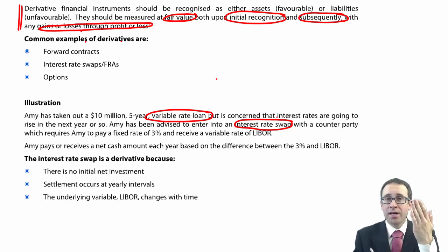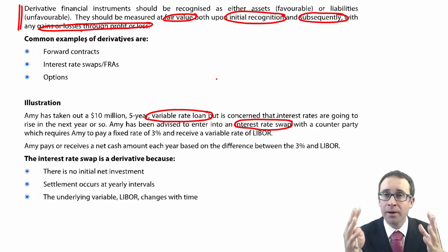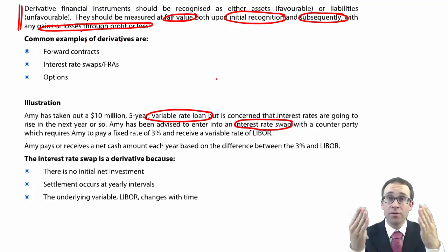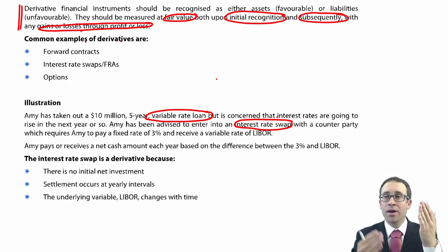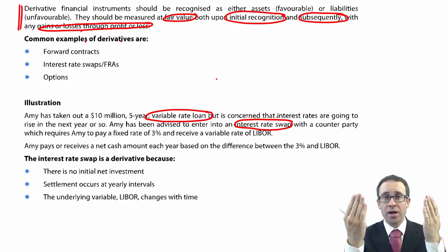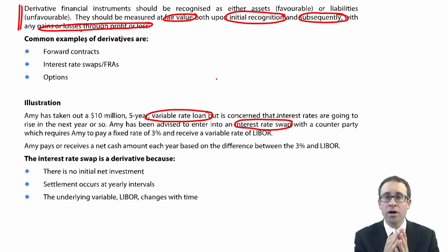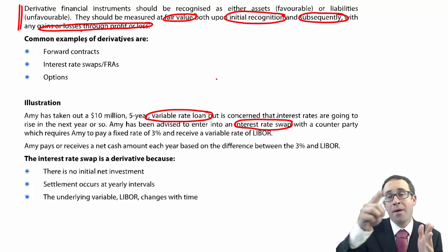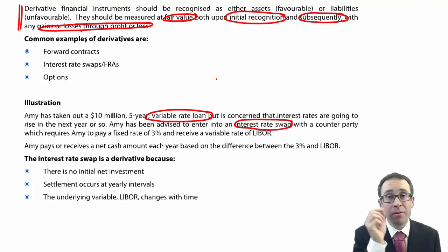You enter into an interest rate swap agreement. There are trillions of dollars of these swaps in existence — you can find somebody who's borrowed the same amount of money for the same period of time. Because you're worried about interest rates rising, you approach the other party and agree to swap the interest payments. You still have your own borrowings, but you swap the payments — you pay theirs and they pay yours. Their interest rate is fixed, which is the key bit: you've borrowed variable, they've borrowed fixed. So you pay their fixed rate, limiting your risk, and they pay your variable rate.